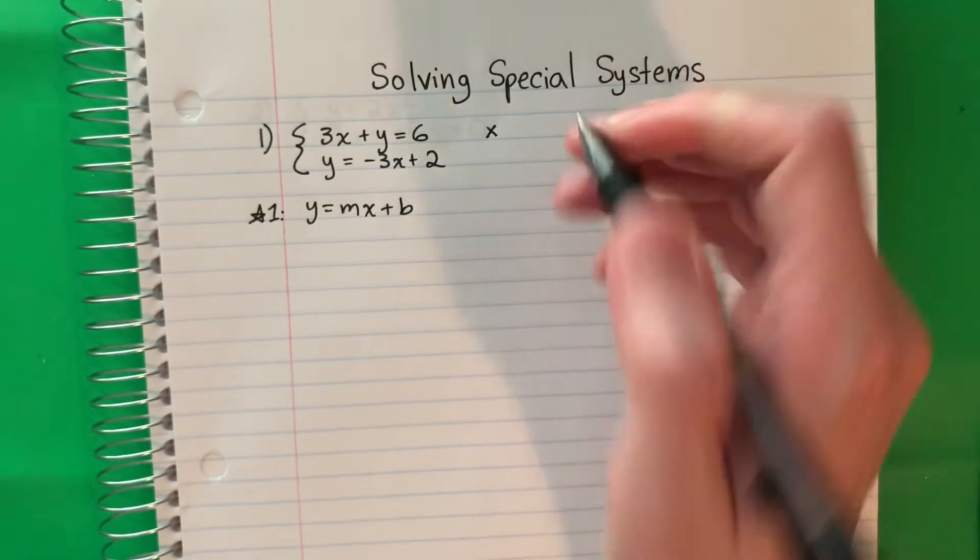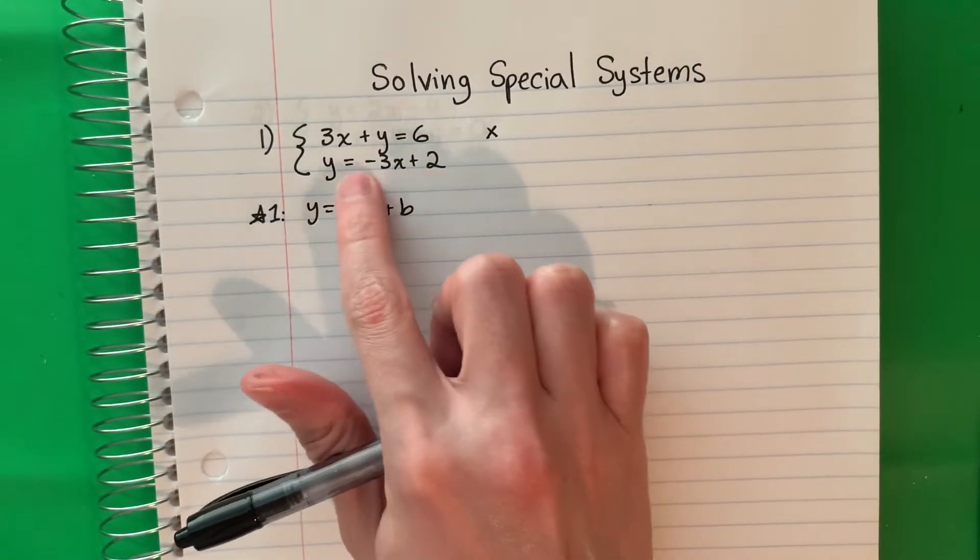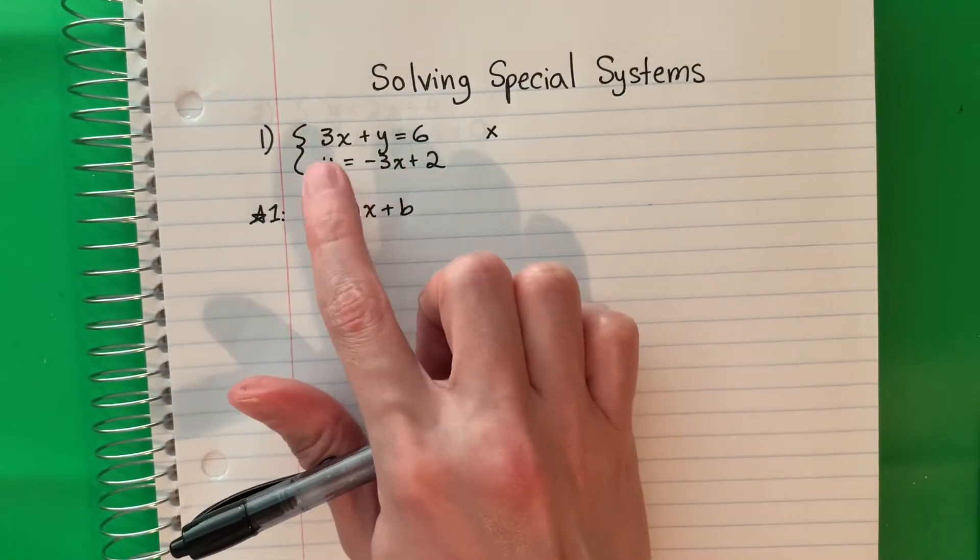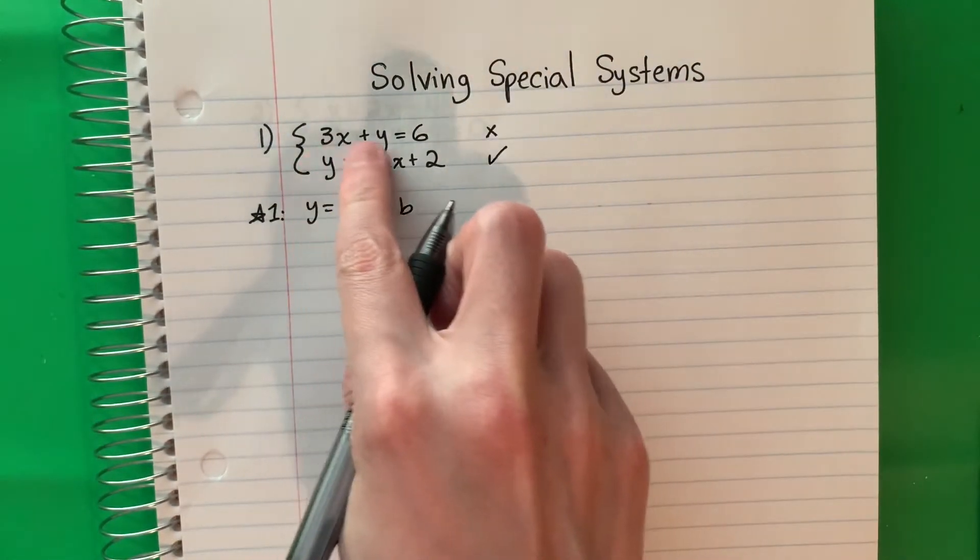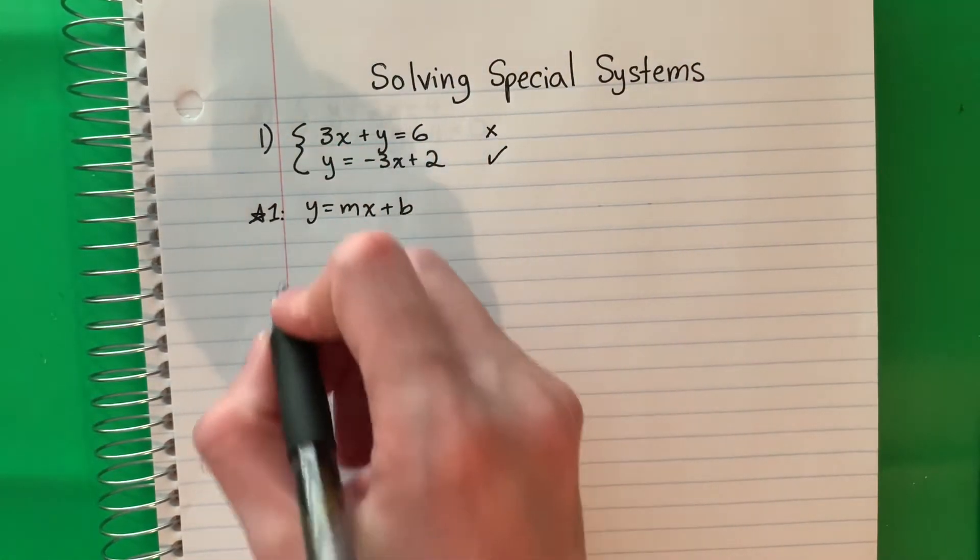We're going to do the same process as we learned in the previous video and see what happens. The first step is we need to get it in slope intercept form, y equals mx plus b. So take a look at this one. Is this in slope intercept form? Is the y alone? No, I need to fix it. And the second one? Yes, this one's good.